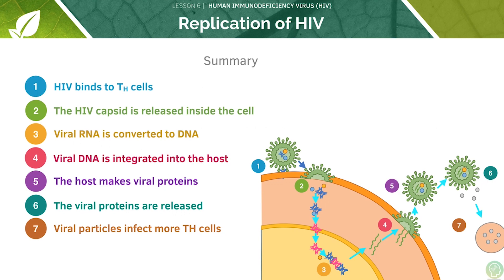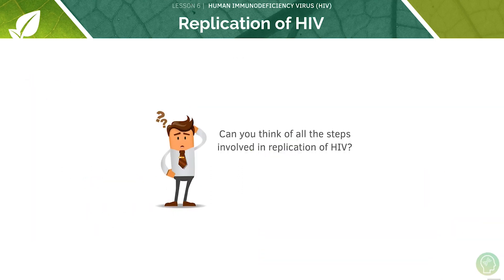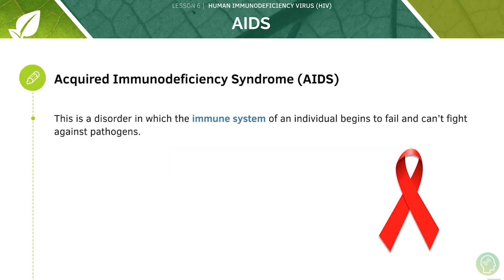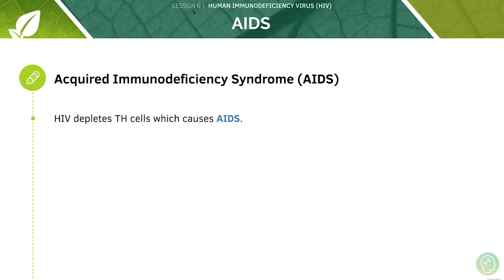This is a summary of HIV replication. Now let's look at AIDS — a disorder in which the immune system of an individual begins to fail and cannot fight against pathogens. It is characterised by a low T helper cell count. HIV depletes the T helper cells, which causes AIDS.